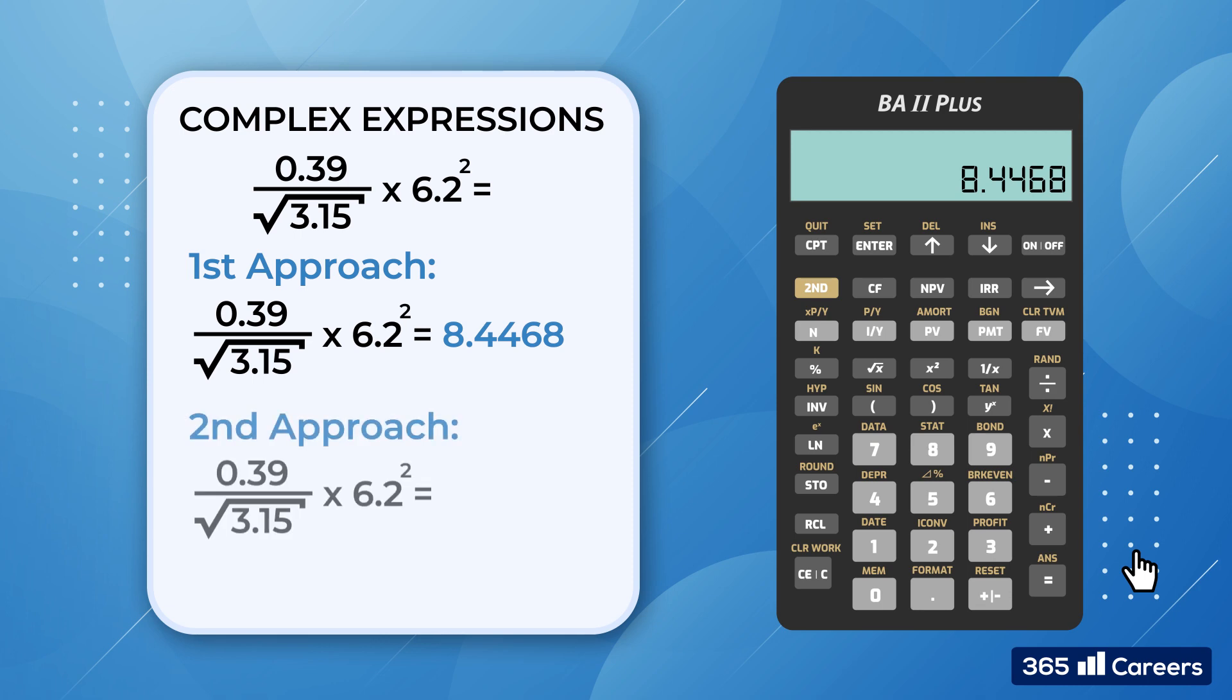As we mentioned, there is a different way to solve this expression. Sometimes when there are a lot of terms in the denominator, it's easier to start from there. Let's do that. First, we enter 3.15. Then we take the square root and hit the 1 over x key to obtain the reciprocal of the result. Finally, we will multiply by the numerator of 0.39 and 6.2 to the power of 2.